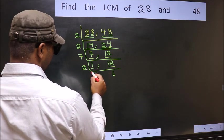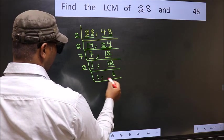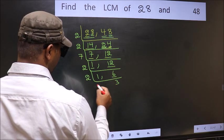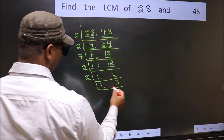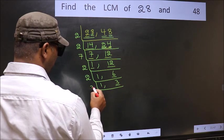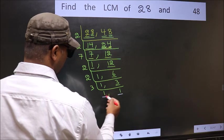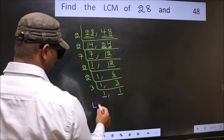12 is 2 sixes 12. Now we have 6. 6 is 2 threes 6. Now we have 3. 3 is a prime number, so 3 once 3. So we got one in both places.